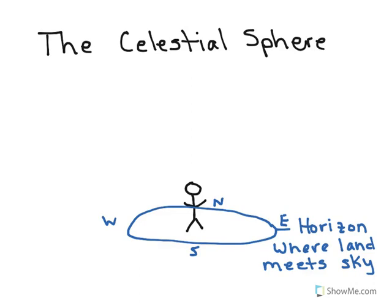As Earth rotates, that is going to change what's on the horizon. So when we say we see stars rising in the east, what's actually happening is the eastern horizon is dipping lower and allowing us to see new stars. And similarly, when we see stars set in the west, it's because our western horizon is rising up and blocking out those stars. So Earth's motion is affecting what we see on the horizon.